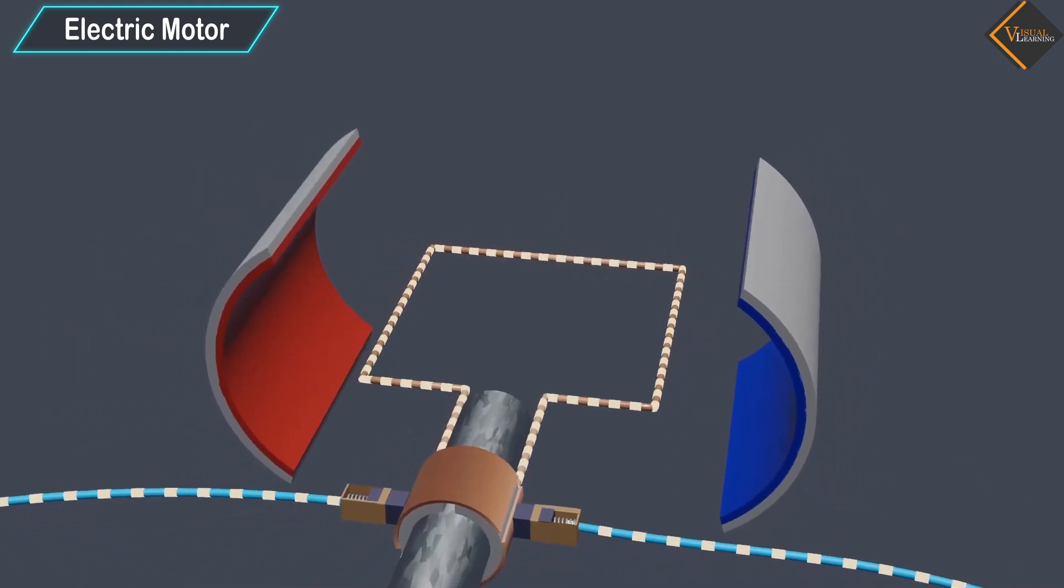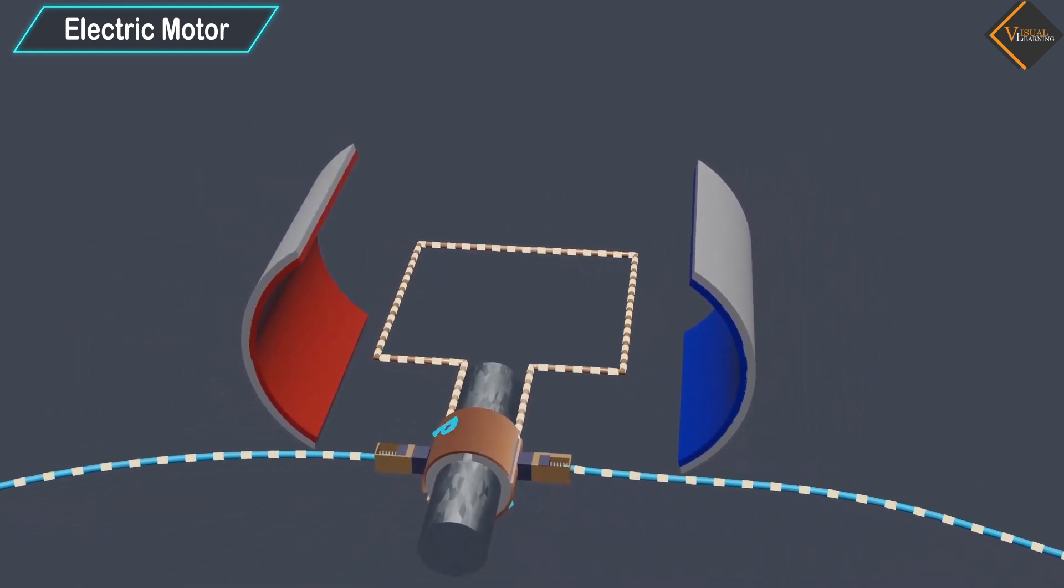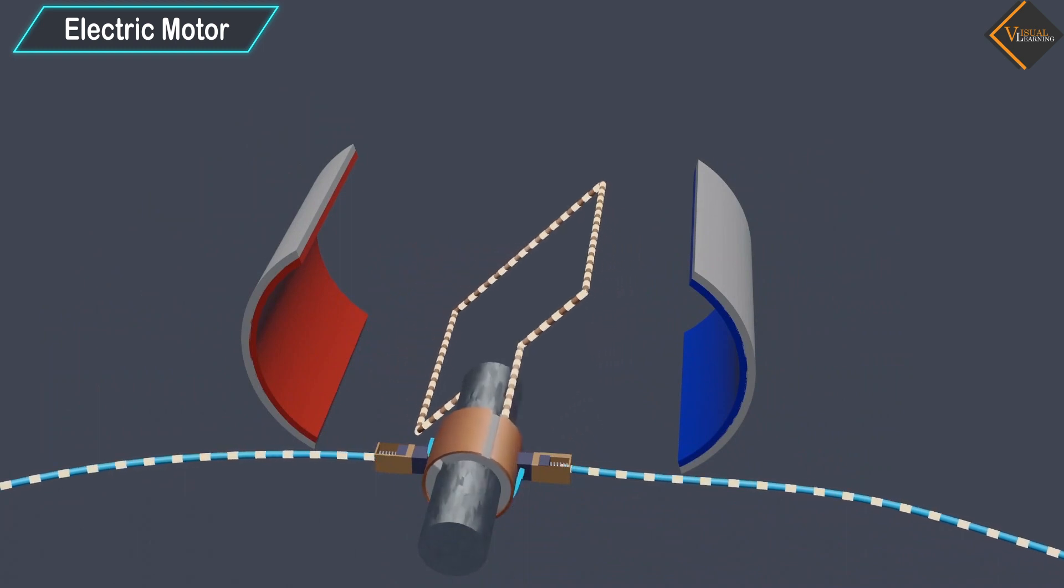Thus, the coil and the axle O, mounted free to turn about an axis, rotate anticlockwise.